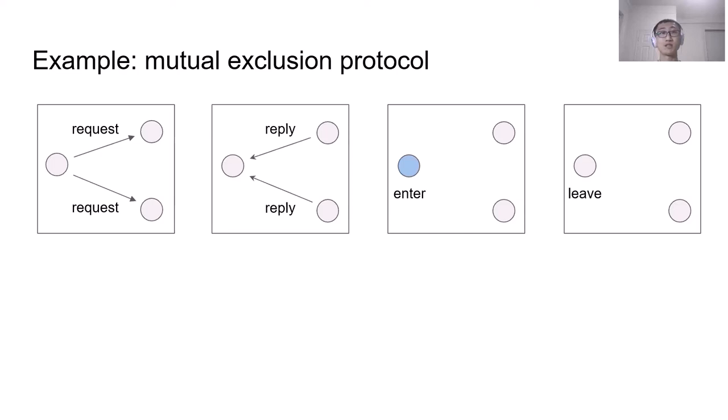The desired property of correctness for such a protocol is that at any time through the execution, only one node can hold the critical section. This property is an invariant. By invariant, we mean it holds true at any time through the execution. However, it is not self-inductive. By inductive, we mean starting from a state that satisfies the invariant and takes some action, we should end up with a new state that still satisfies the invariant.